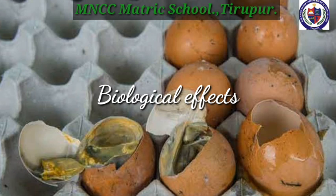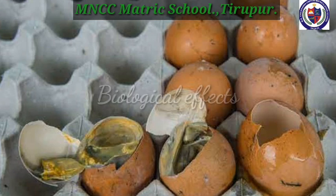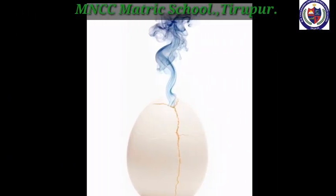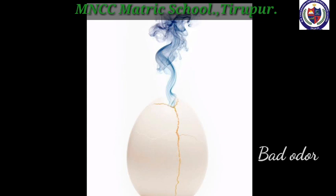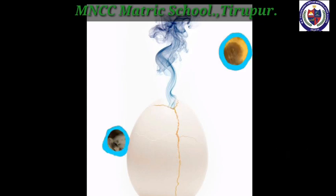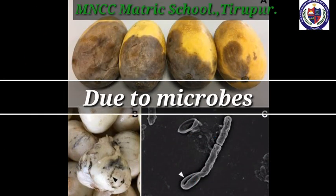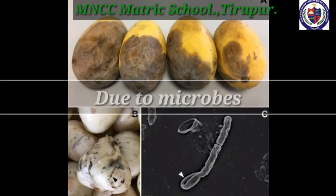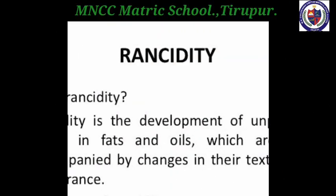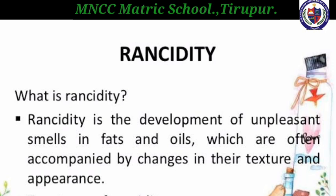First, we move to biological effects. The reactions catalyzed by enzymes result in the degradation of food quality, such as development of bad taste and odor and loss of nutrients. For example, rotten eggs develop a bad smell due to the formation of hydrogen sulfide gas. Decaying of vegetables and fruits is caused by microbes.